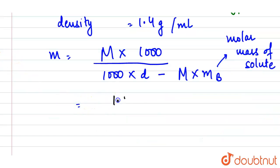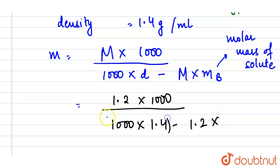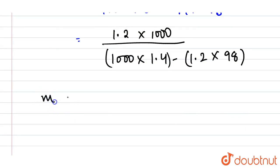Substituting the values: molality = (1.2 × 1000) / (1000 × 1.4 − 1.2 × 98). After solving this, we get the molality value.